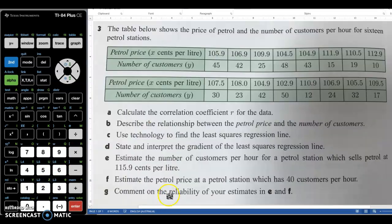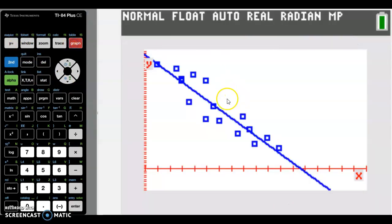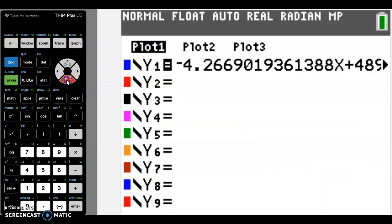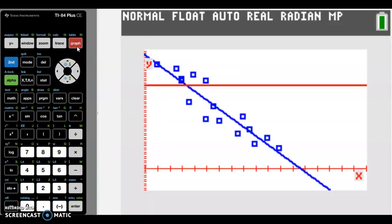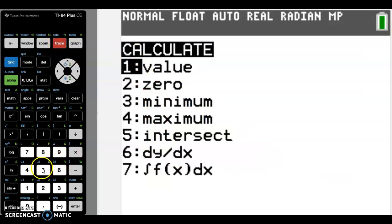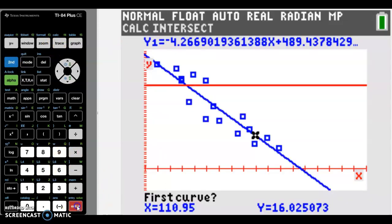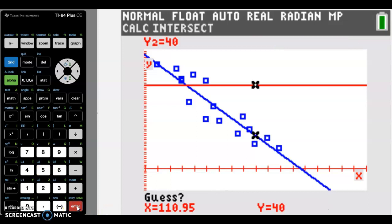And the last question on here, I think for now, is for 40 customers. Well, for 40 customers, we actually want where the customers, the Y value. So we want the Y at 40. Simplest way to do that is to go to Y and put a line in here at 40. And then when we go graph, then we can see that there's an intercept. And therefore, we can calculate that intercept. Five. First curve, enter. Second curve, enter. Guess it. Can't be bothered because it's straight lines. Maybe one intercept. And there's our answer. 105.3. So look at what it is. It's cents per litre.